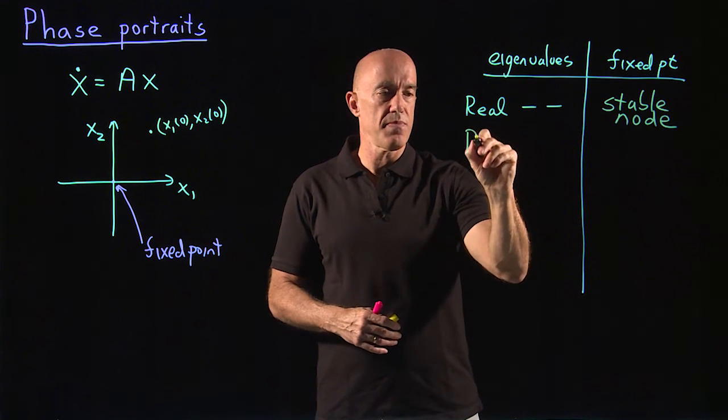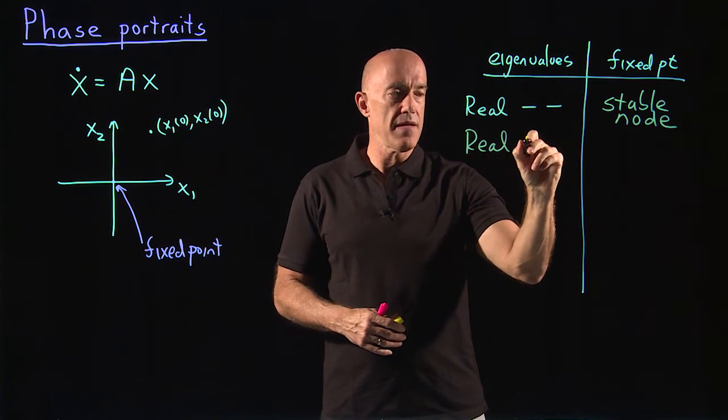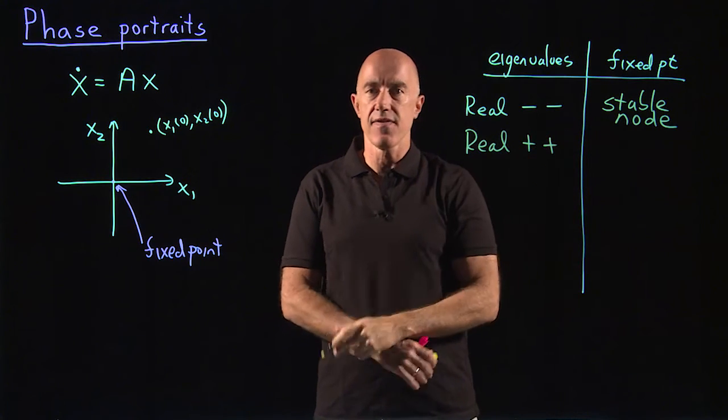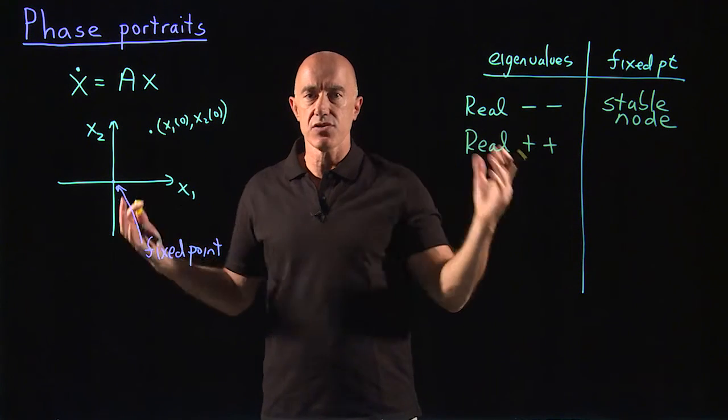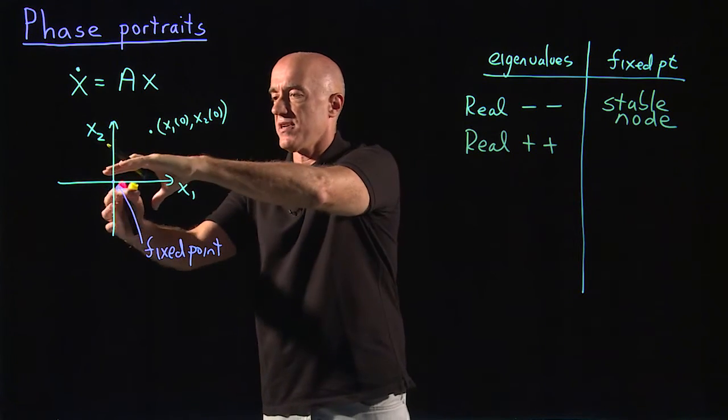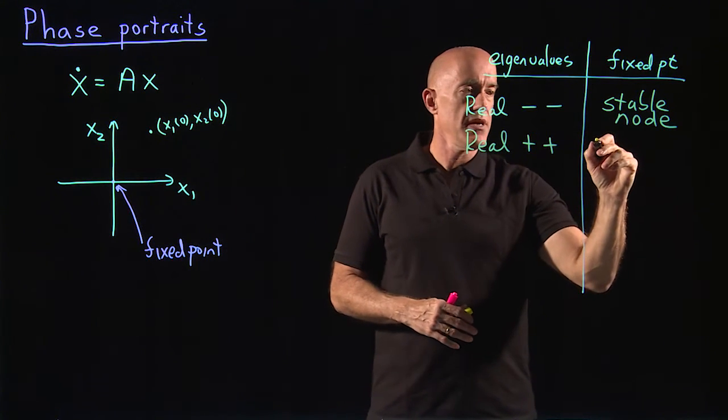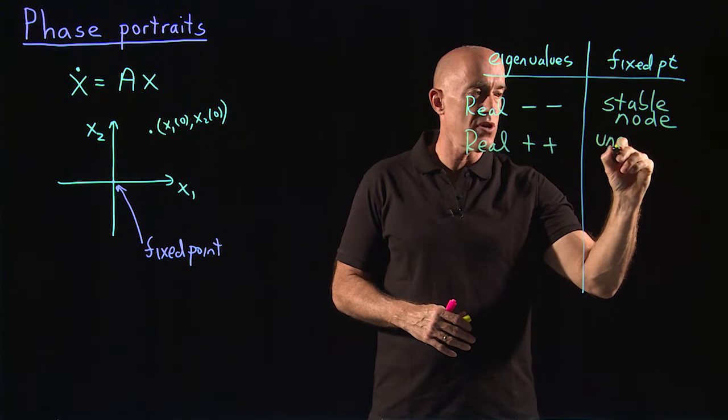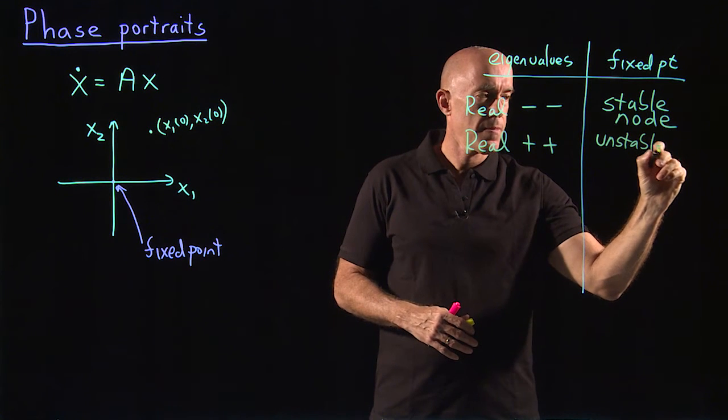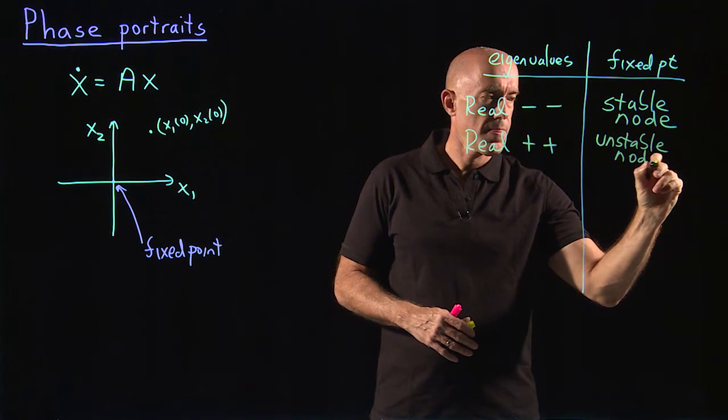The other case would be real and both eigenvalues are positive. Then the exponentials are growing in time. Everything's running away from the origin. This is called an unstable node.